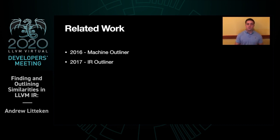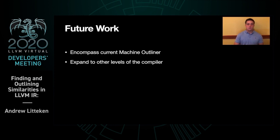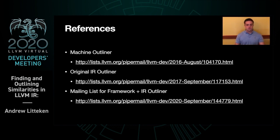You might also be wondering how this compares to the IR outliner proposed in 2017. In short, these two implementations are not that different. However, this new IR outliner is backed by the more accessible similarity framework. In the future, we hope that this framework can be expanded upon to become a more general similarity detector throughout the compiler, to leverage similarity to inform better code generation and size reduction decisions. Thank you and I look forward to your questions.